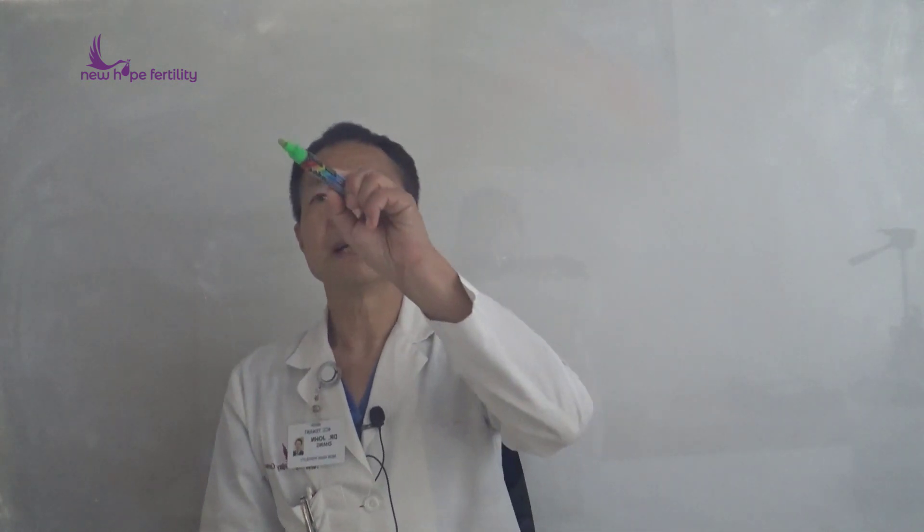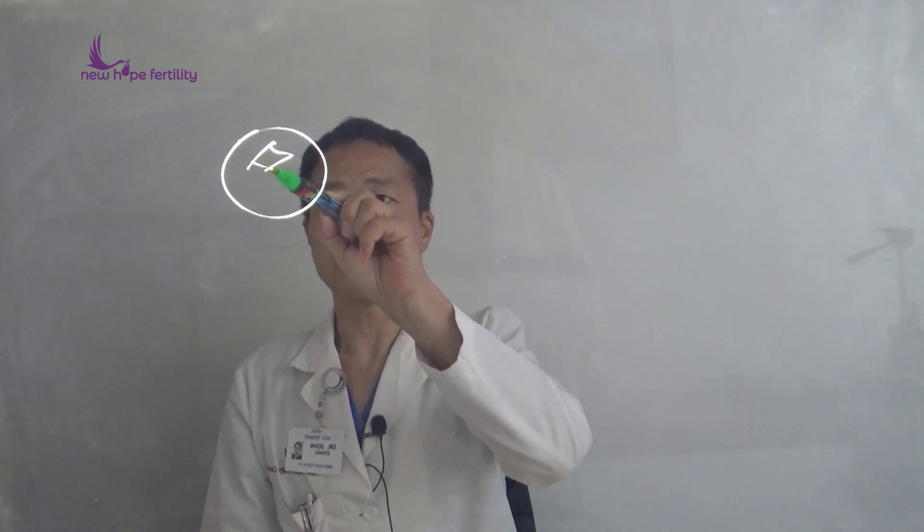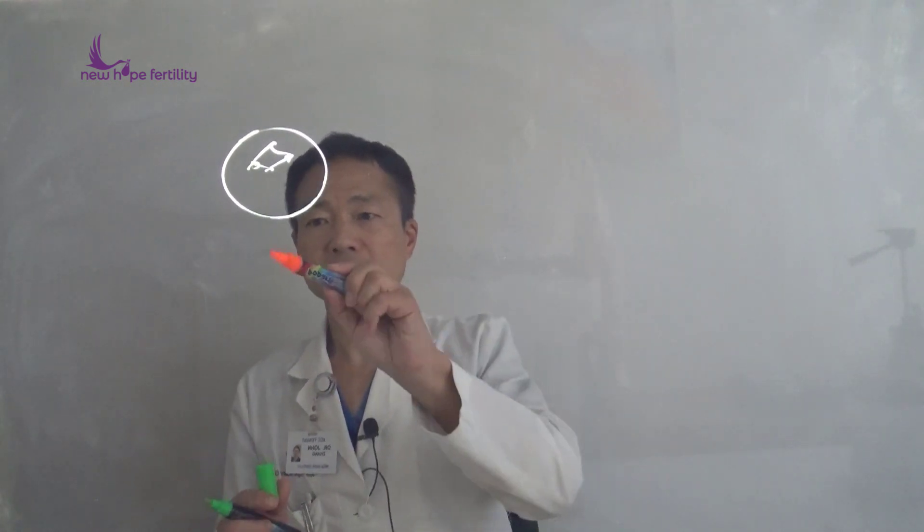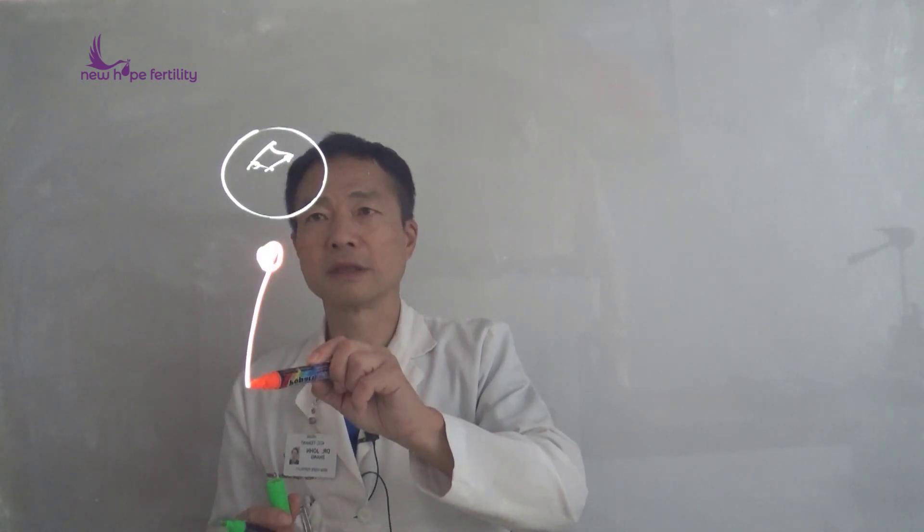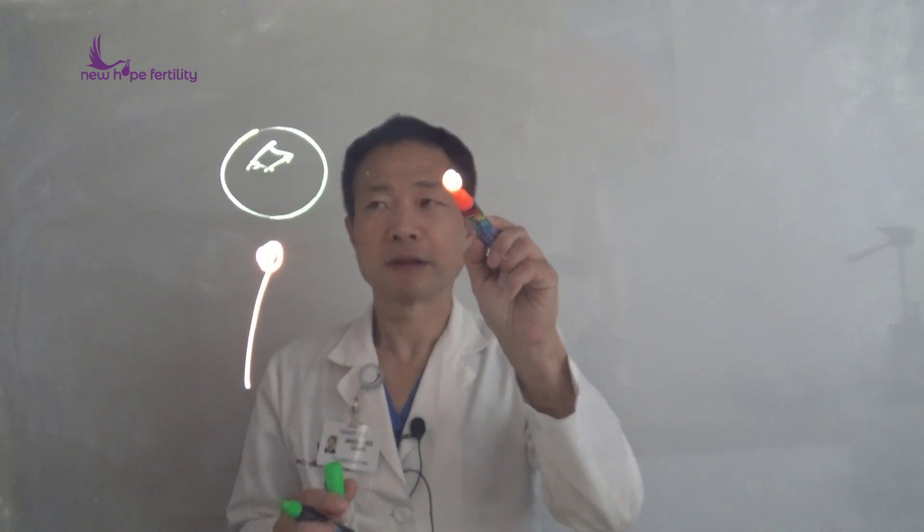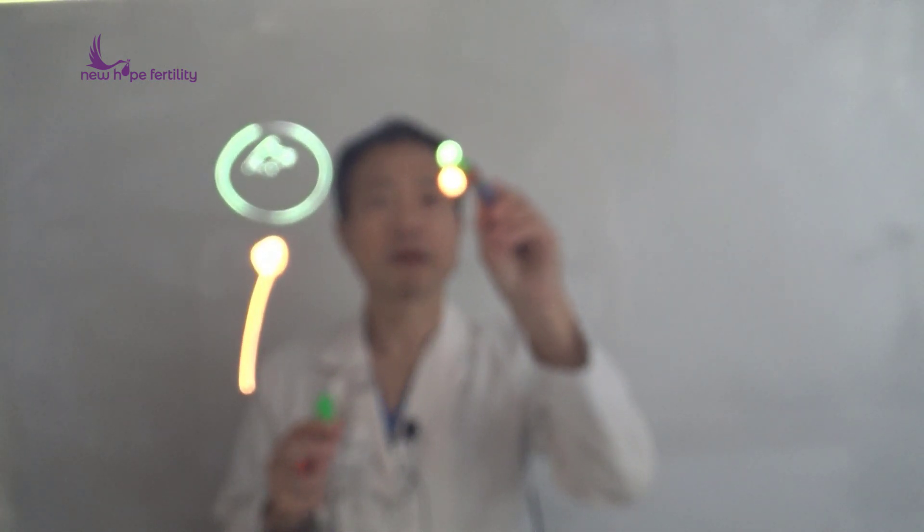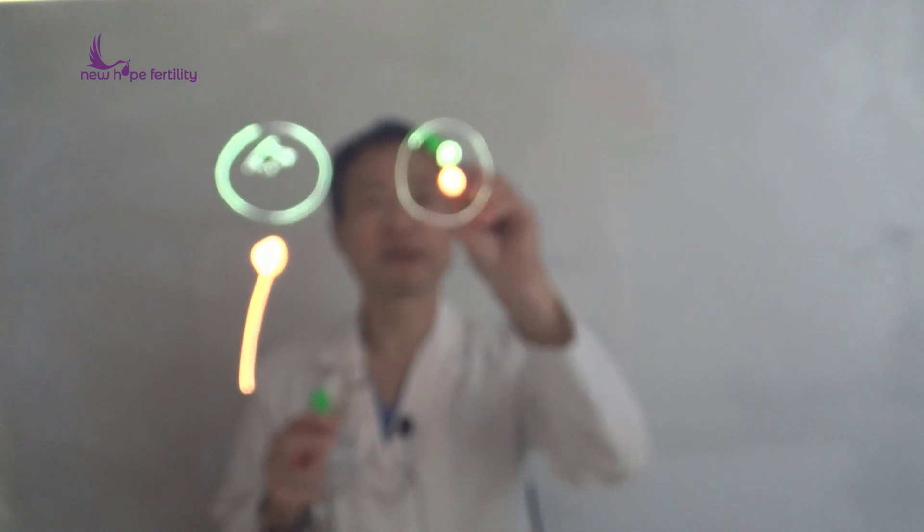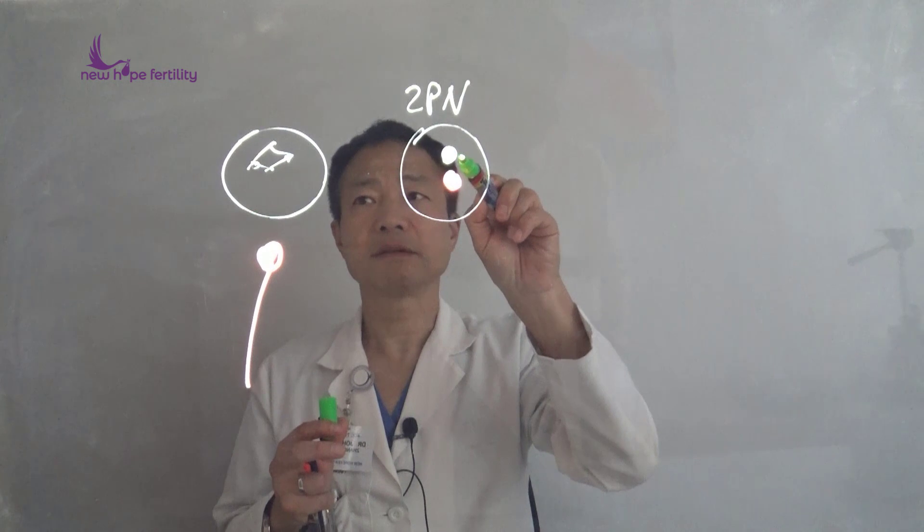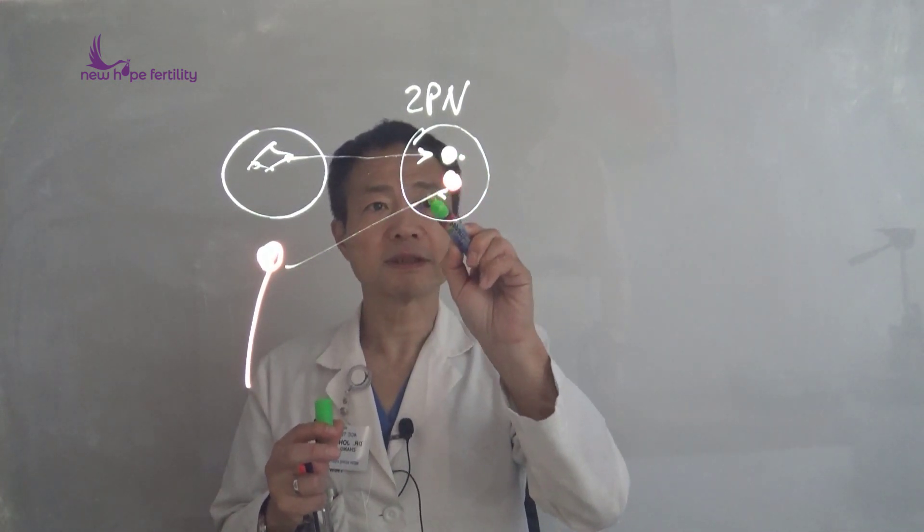When the egg meets with the sperm, the egg is fertilized. That's called a 2PN embryo—one pronucleus from the egg's nucleus and one pronucleus from the sperm head.